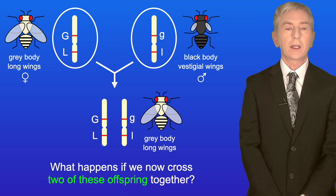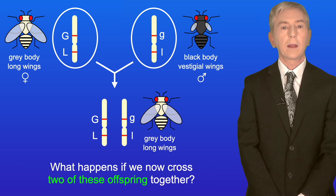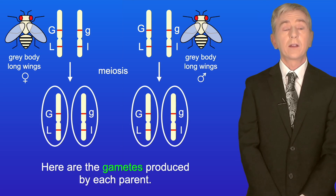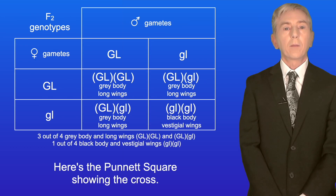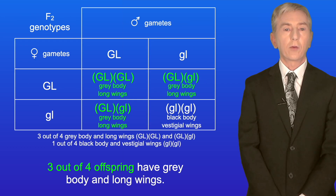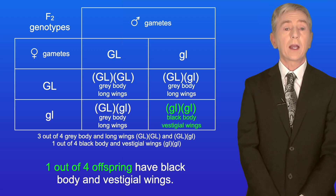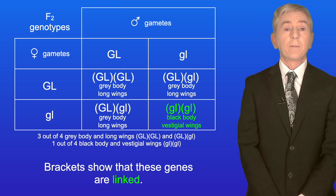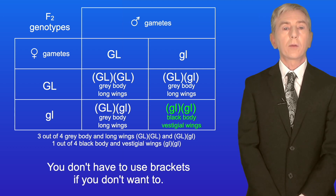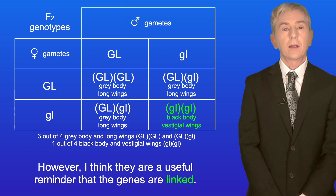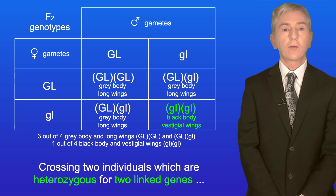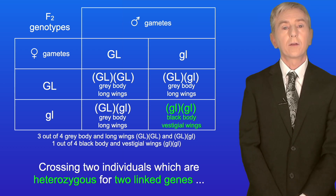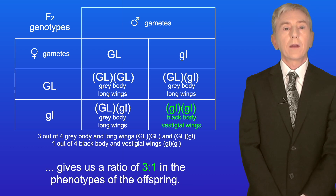Now what happens if we cross two of these offspring together? Here are the parents and the gametes produced by each parent, and here's the Punnett square showing the cross. Three out of four offspring have grey body and long wings, and one out of four offspring have black body and vestigial wings. I'm using brackets in the genotypes as a useful reminder that these genes are linked. So crossing two individuals heterozygous for two linked genes gives us a ratio of 3:1 in the phenotypes of the offspring.